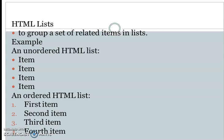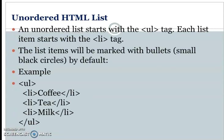An ordered list can also use A, B, C, D. The unordered list uses the UL tag. An unordered list is defined using the UL tag, and we define the items within the unordered list using that tag.